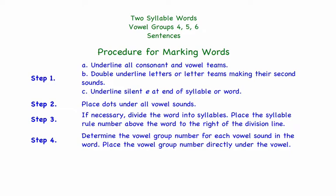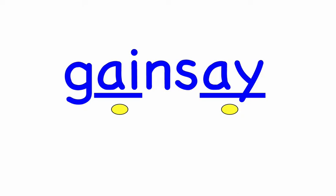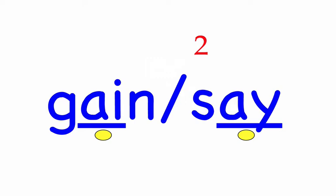The first word is gainsay. Gainsay means to contradict or to deny. First syllable: gain, three sounds, G-A-N. Second syllable: say, two sounds, S-A. Step one: identify teams — we have two teams. Step two: identify vowel sounds — two vowel sounds, so we divide into syllables. We have two consonants between our two vowel sounds, so we divide between them according to syllable rule two. Both teams, A-I and A-Y, are vowel group 4 teams representing the long 'A' sound.